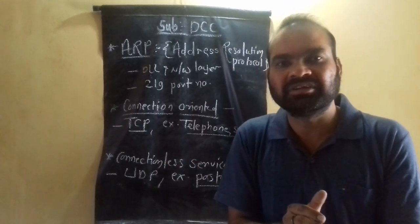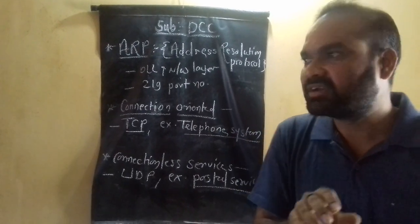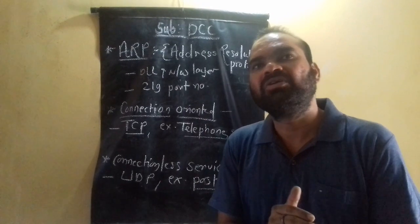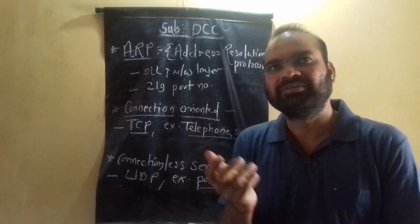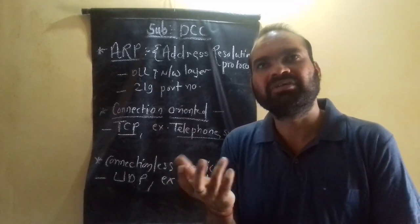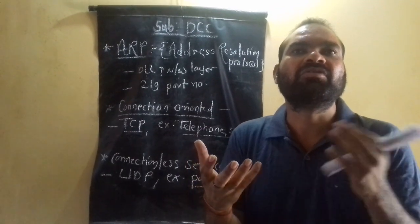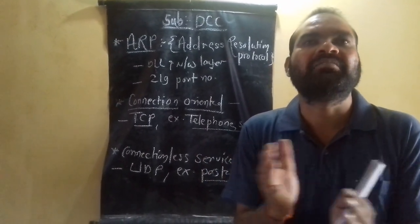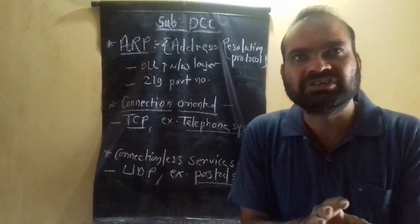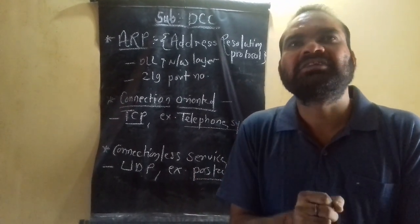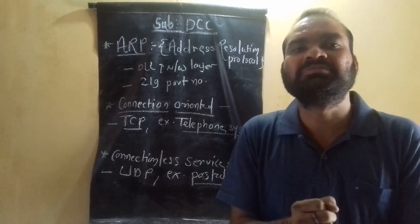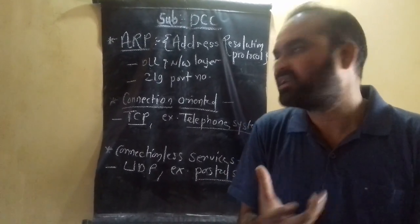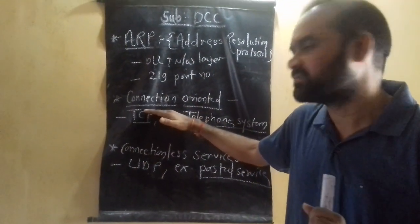One particular example of a connection-oriented system is the telephone system. One caller calls a friend or relative, and the friend or relative receives the call. Both sides communicate successfully in a bi-directional manner. In that situation, the connection is established, and then released or terminated — those are the key points of connection-oriented systems.